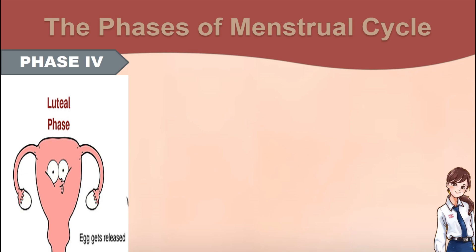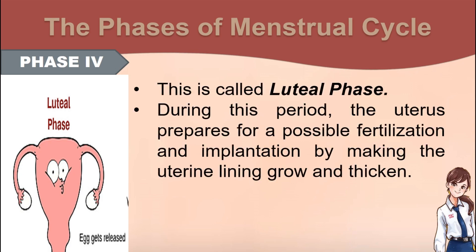Phase 4 – This is called the luteal phase. During this period, the uterus prepares for a possible fertilization and implantation by making the uterine lining grow and thicken.